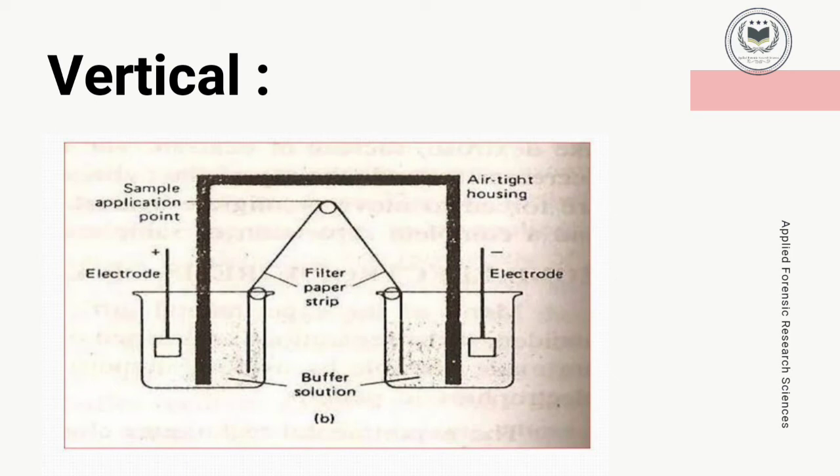Vertical paper electrophoresis is similar to horizontal paper electrophoresis, but instead of a horizontal plate, there are three rods present which hold the paper vertically, as shown in the figure. After placing the paper, a safety cover is placed.